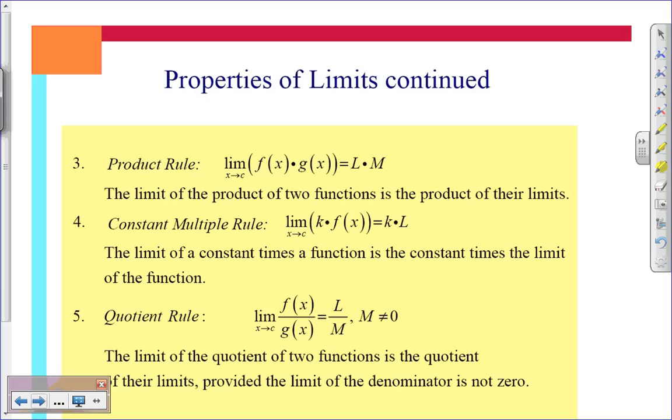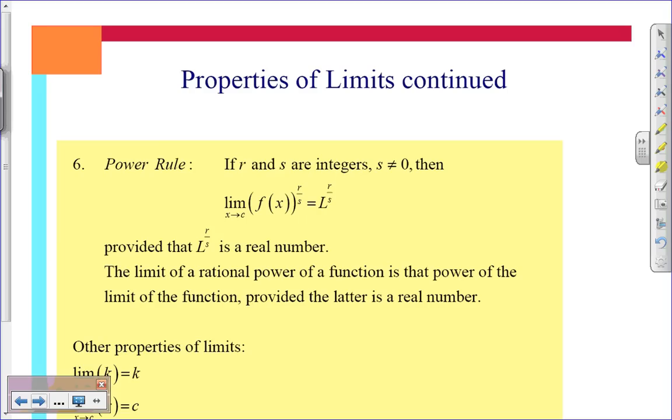Product rule, again, the limit of the product of two functions is equal to the product of their limits. The constant multiply rule is if I have a constant k multiplied by a function, then the limit as x approaches c is equal to that constant times its limit. The quotient rule, the limit of the quotient of two functions, f of x and g of x, is equal to the quotient of their limits, l and m. And of course, m cannot equal zero because then it would be undefined. And the power rule. So if I have a limit as x approaches c of a function f of x and it's raised to a power, it will be equal to its limit raised to that same power.